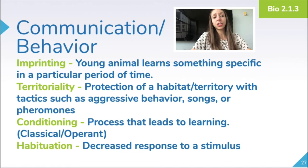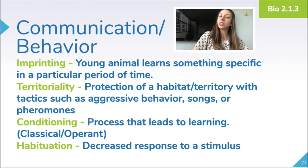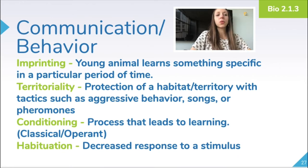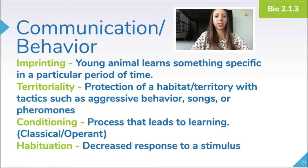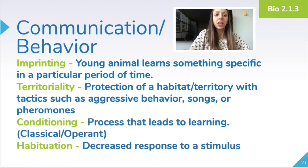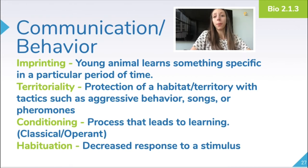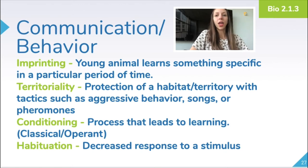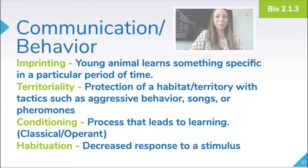In terms of communication and behavior, a few terms you might want to know: imprinting is when a young animal learns something specific during a particular period of time. Territoriality is the protection of a habitat or territory using tactics such as aggressive behavior, songs, or pheromones. Conditioning is a process that leads to learning, and we have both classical and operant conditioning. Habituation is when an organism shows a decreased response to a stimulus over time.